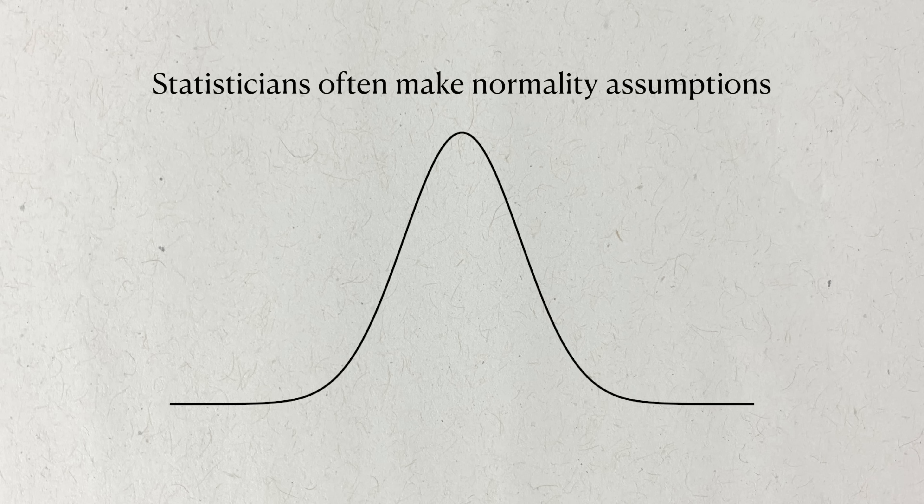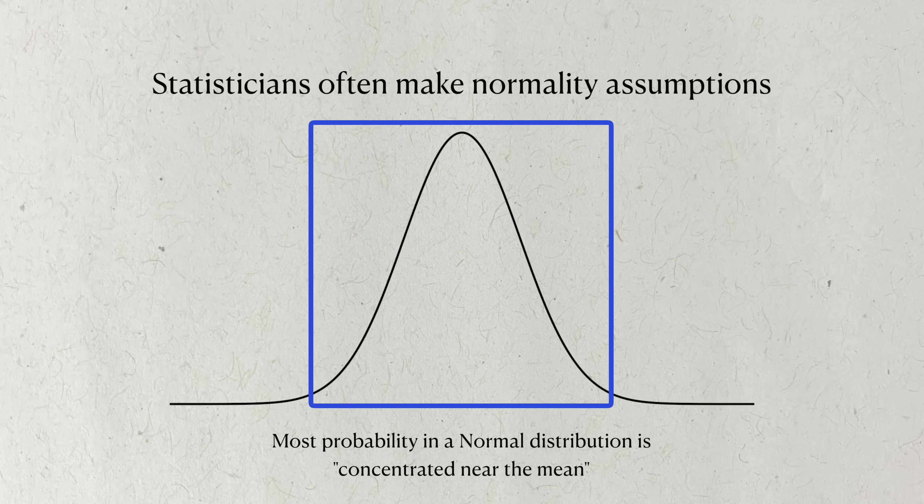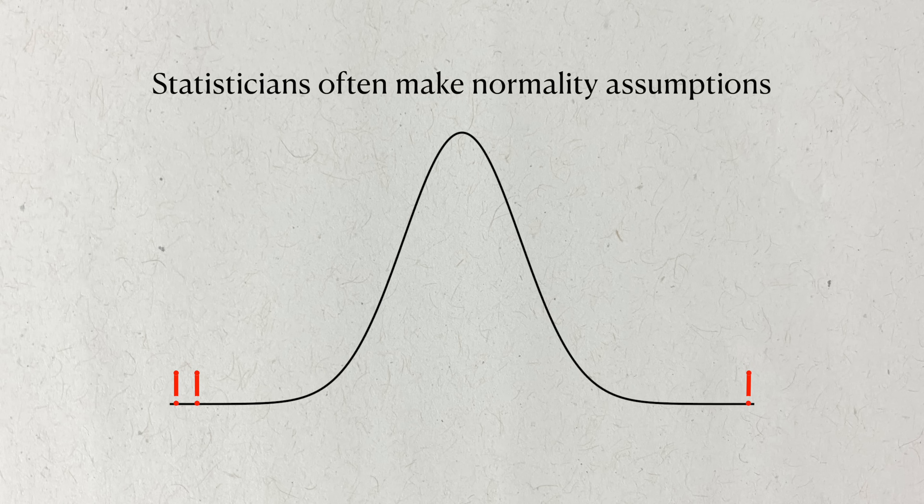Many times, we assume a distribution to be normal. Normal distributions have the property that most of their probability is concentrated near the mean. You often hear this phrase as the 68-95-99 rule. Outliers challenge this concentration. If there's a possibility that there can be many outliers, it poses a danger that the data may come from a so-called heavy-tailed distribution, where extreme events are more likely, and this would violate the normal distribution assumption.